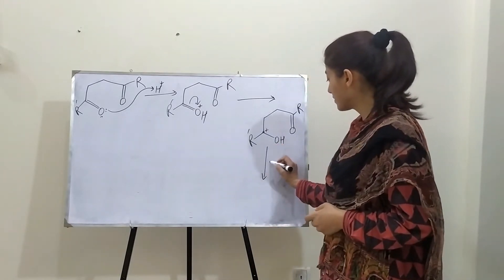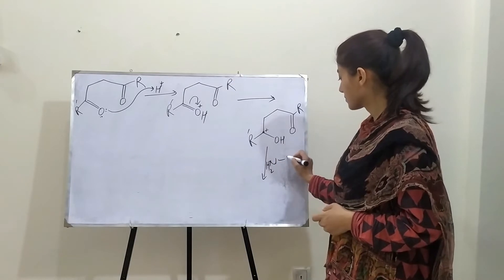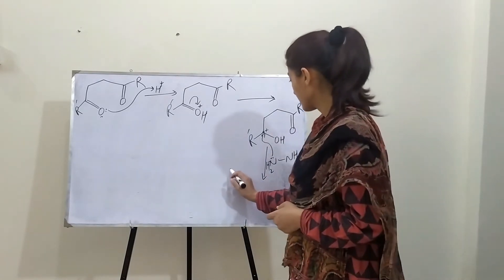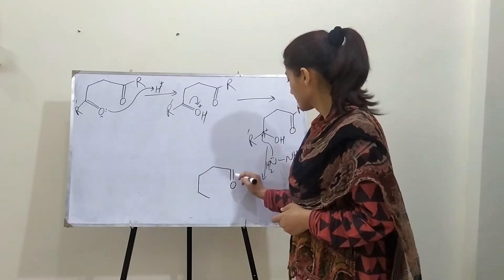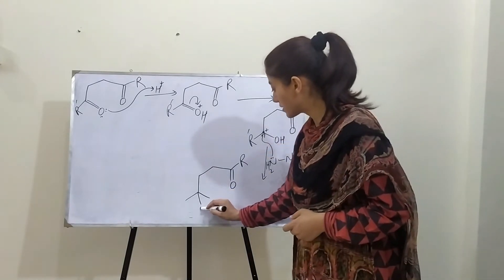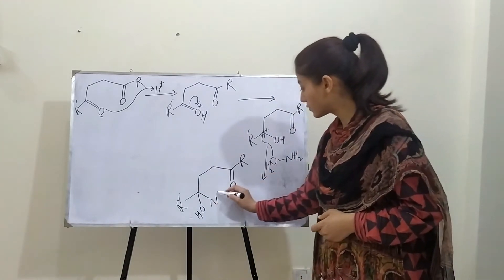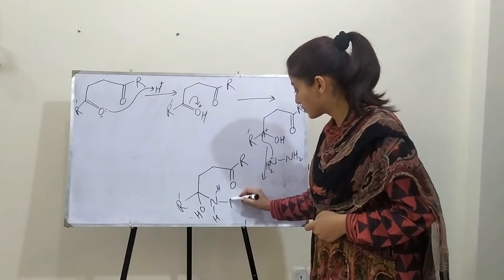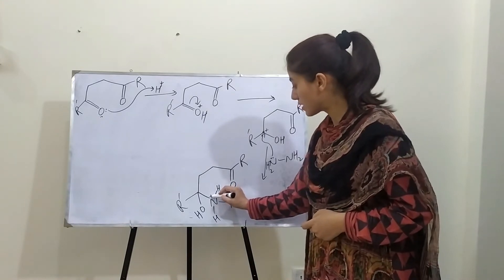Hydrazine then attacks the positively charged carbon. The lone pair on the nitrogen of hydrazine attacks this carbon. As a result, the hydroxyl group is repositioned. The nitrogen now bears two hydrogens and is further attached to an NH2 group. Since this nitrogen is making four bonds, a positive charge is placed on it.